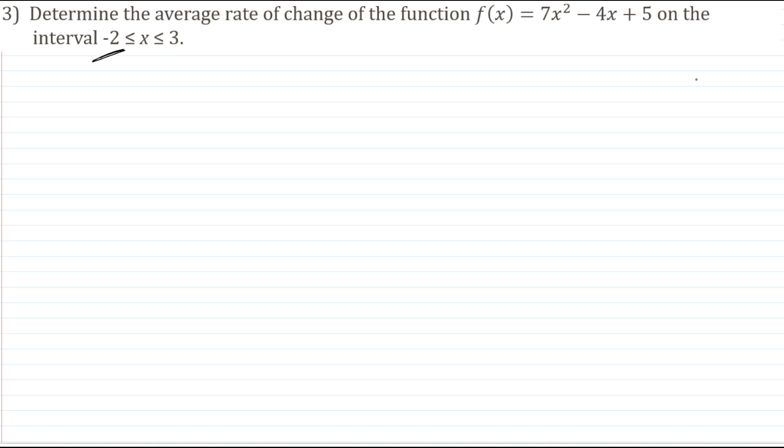So if we were to do a rough sketch here, well our function is a parabola, and we have some point on there that has an x value of -2, and some other point that has an x value of 3. We're trying to find the slope of the line that joins those two points, or that passes through those two points, and that's called the secant line.